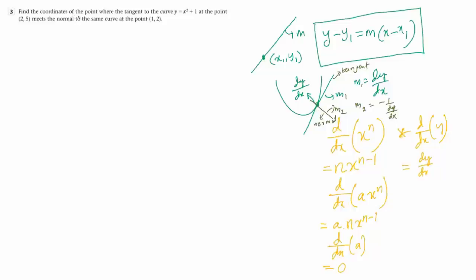We have to find a combination of what we have just seen. We have to find the equation of the tangent and the equation of the normal. We have to find two equations and then find the point of intersection of these two lines — that is the idea. There is no point of intersection without the equations, so the first task is to find the equation of the two lines. Let's start with the equation of the tangent first.